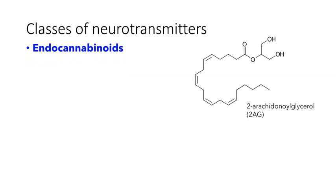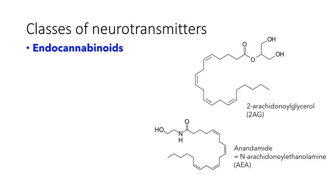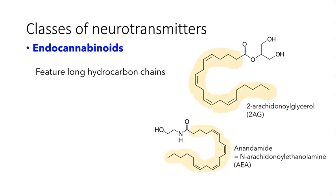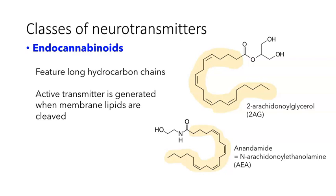The last class of neurotransmitters are endocannabinoids — the endogenous molecules that can bind to the receptors targeted by cannabis. The two best known endocannabinoids are 2-arachidonoyl glycerol (2-AG) and N-arachidonoylethanolamine, also called anandamide or AEA. What I want you to notice about these compounds is that they feature long hydrocarbon chains. Both of these molecules have a set of 18 carbons, and this long hydrocarbon chain reflects the origin of these molecules — the active transmitters are generated when membrane lipids are cleaved to create them.